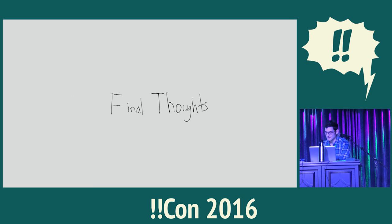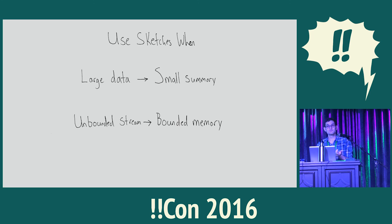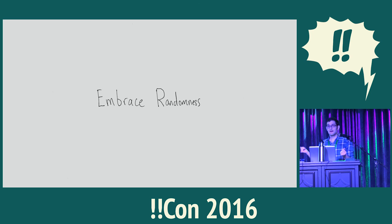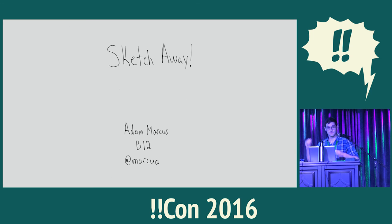Some final thoughts. Today we talked about two sketches: a bloom filter and a count-min sketch. But there are lots of other fun data structures that help us approximate various properties of our data sets — they all have wonderful names like the HyperLogLog and the t-digest. You should use sketches whenever you have a really large data set you want to summarize in a small amount of space, or if you have an unbounded stream of data — say network packets coming in to infinity — and you'd like to summarize it in a bounded amount of memory. With that, I want to invite you to embrace randomness. In computer science and software engineering, we're trained to think about how a system either works in a 100% correct fashion or how it breaks down. But in practice, no data set is 100% accurate. There are entire fields like randomized algorithms and probabilistic data structures that help us embrace randomness to give us really accurate approximations of what we're looking for. So with that, sketch away. Thanks.